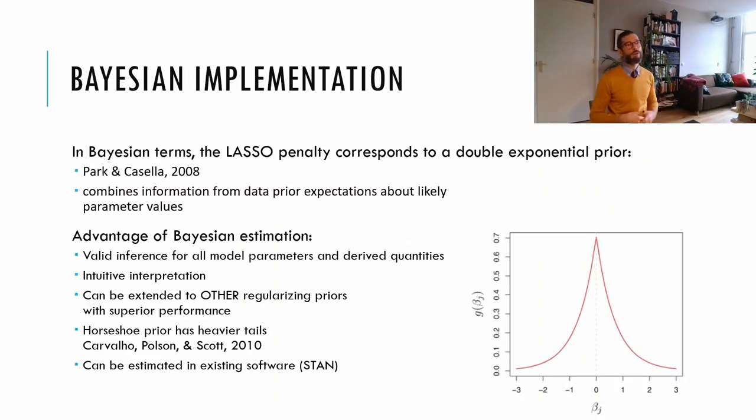It has long been known that there is a Bayesian equivalent to lasso regression. And that is regression with a Laplace prior, or a double exponential prior, which assigns a high prior probability mass to values close to zero. Bayesian regression differs from frequentist regression in the sense that it combines prior expectations about likely parameter values with the observed data to estimate the posterior probability of different parameter values.